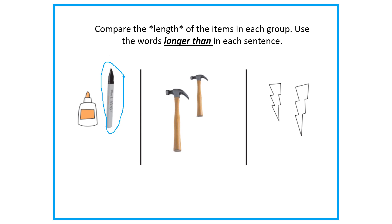I'm taking a minute to look at which hammer I think is longer than the other. I think I made my choice. I want you to make your choice also. I think that this hammer is longer than this hammer. Agree or disagree? If you agree, I would like for you to tell me why, and please use the full sentence saying 'I agree because.' And if you disagree, I would like for you to use a full sentence starting with 'I disagree because.'